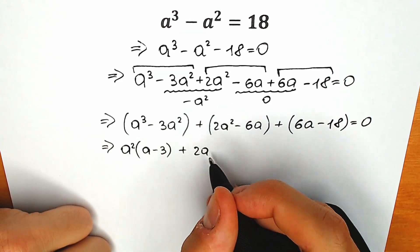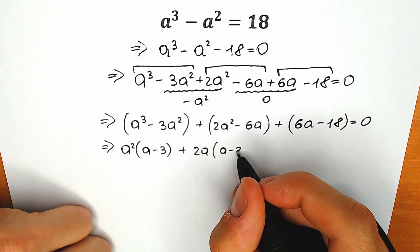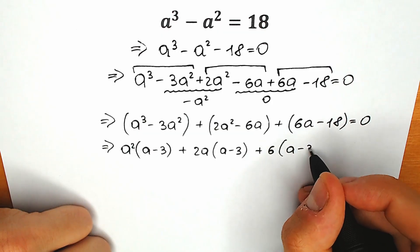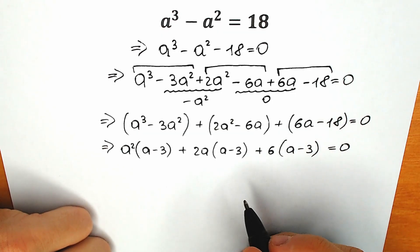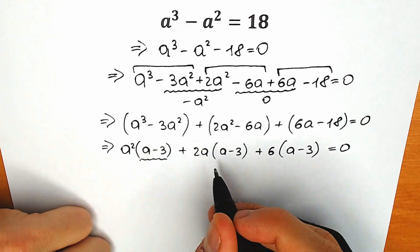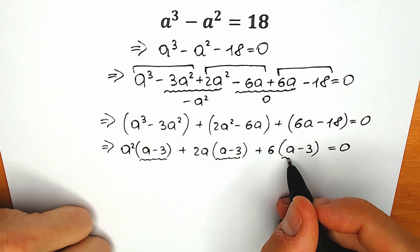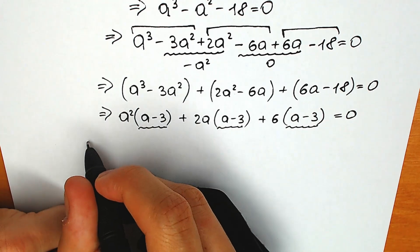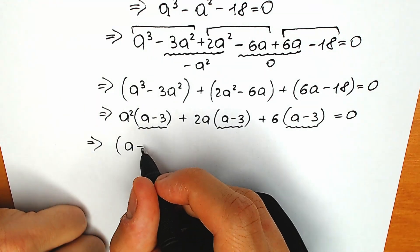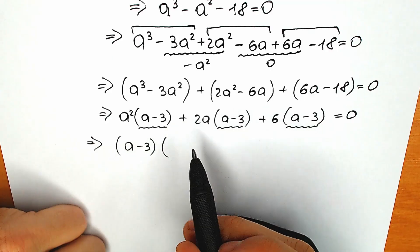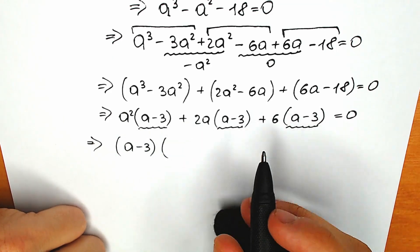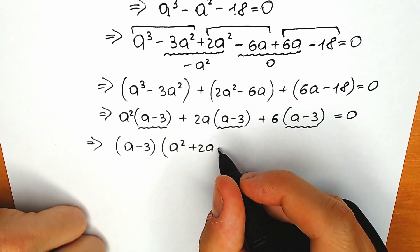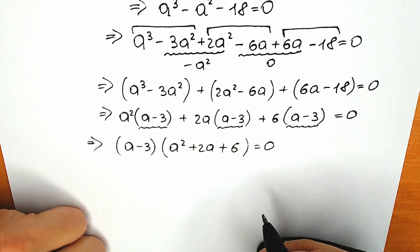From the second group, 2a squared minus 6a, we can factor out 2a to get 2a times (a minus 3). And from the third group, 6a minus 18, we can factor out 6 to get 6 times (a minus 3), all equal to zero. Now we have a minus 3 appearing in every group, so we factor it as (a minus 3) times (a squared plus 2a plus 6) equals zero.